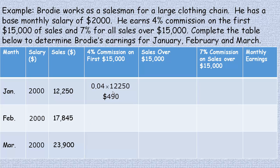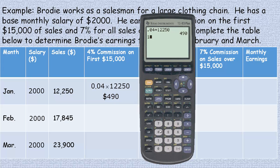For February, I'm going to do this column by column and then figure out monthly earnings for each month. In February he sold seventeen thousand eight hundred forty five. If we take seventeen thousand eight forty five and subtract fifteen thousand, he made it right up to the fifteen thousand dollar mark and then has two thousand and forty five dollars above that.